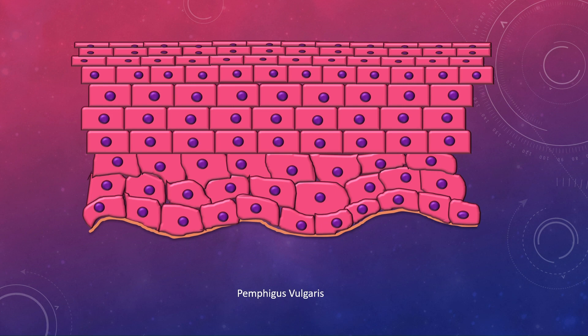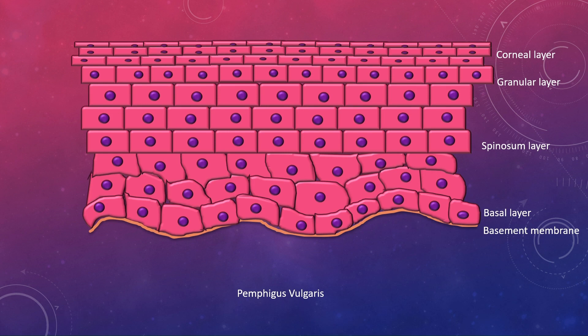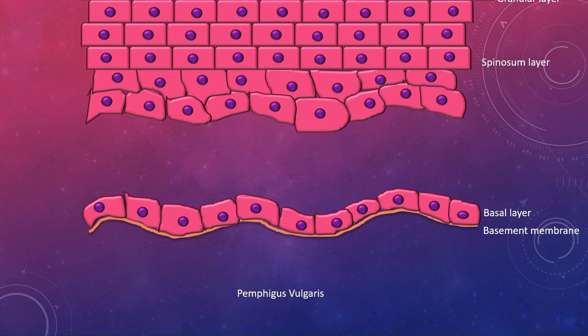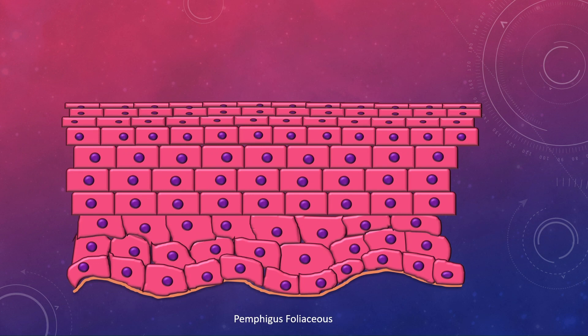In the illustration, in pemphigus vulgaris there is a gap between the basal layer and the rest of the epithelial keratinocytes. The layers from bottom to top are: basement membrane, basal layer, spinous layer, granular layer, and corneal layer. In vulgaris, the gap is between the basal layer and all the rest of the epithelial layers above it.